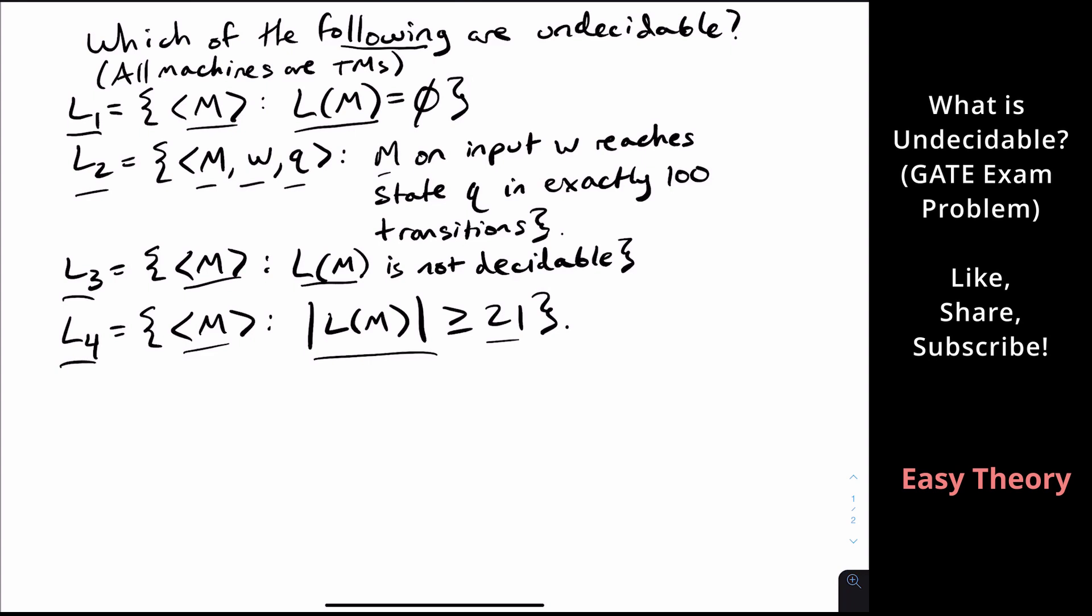So let's look at the first language. Well that's the same thing as the language ETM because the language ETM is the set of all Turing machines with empty language. And this is undecidable because you can show that this is undecidable via Rice's theorem. And we've done a video about what Rice's theorem is. And therefore it's undecidable via Rice's theorem.